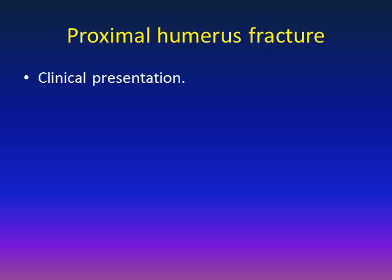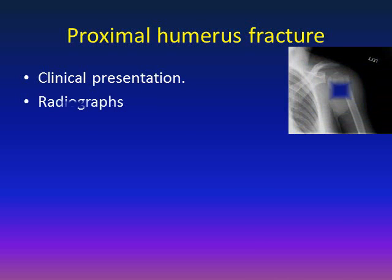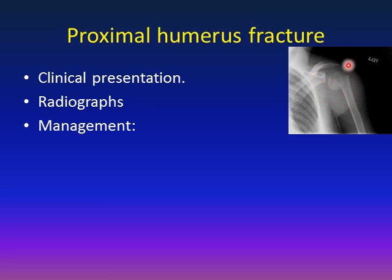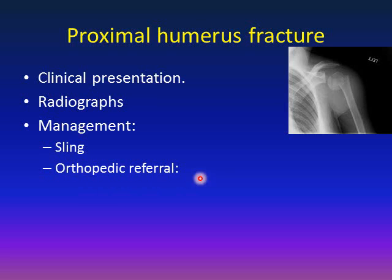Proximal humerus fracture: the clinical presentation is pain, swelling, and deformity of the affected shoulder. Radiographs will show the fracture. Remember that 80% of the growth of the humerus comes from the proximal humerus — that gives great healing and remodeling potential. Remodeling means that if the fracture is angulated or displaced with remaining growth, it will straighten over time. So most of these cases can be treated in a sling; once the child feels comfortable, he can take his arm out.